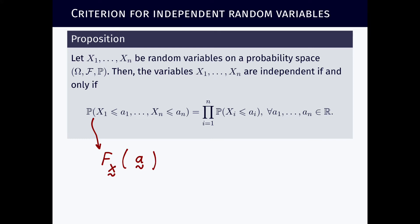And if x tilde of a equals the product from j equals 1 to n of F_Xj of aj, if this is true for every a, this implies that the variables X1, X2, up to Xn are independent. This is what this proposition is saying.